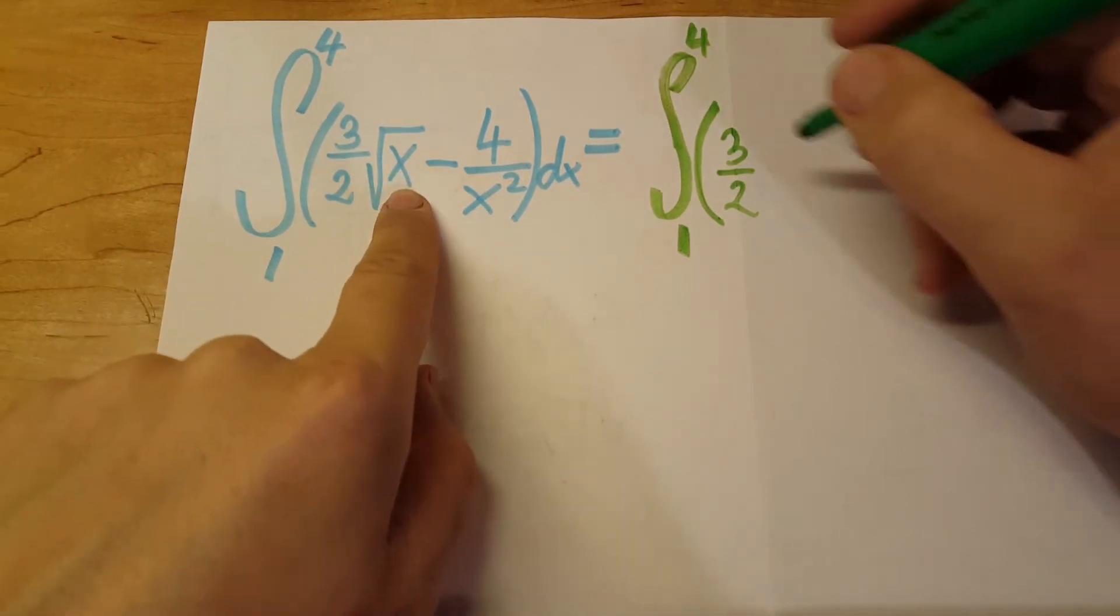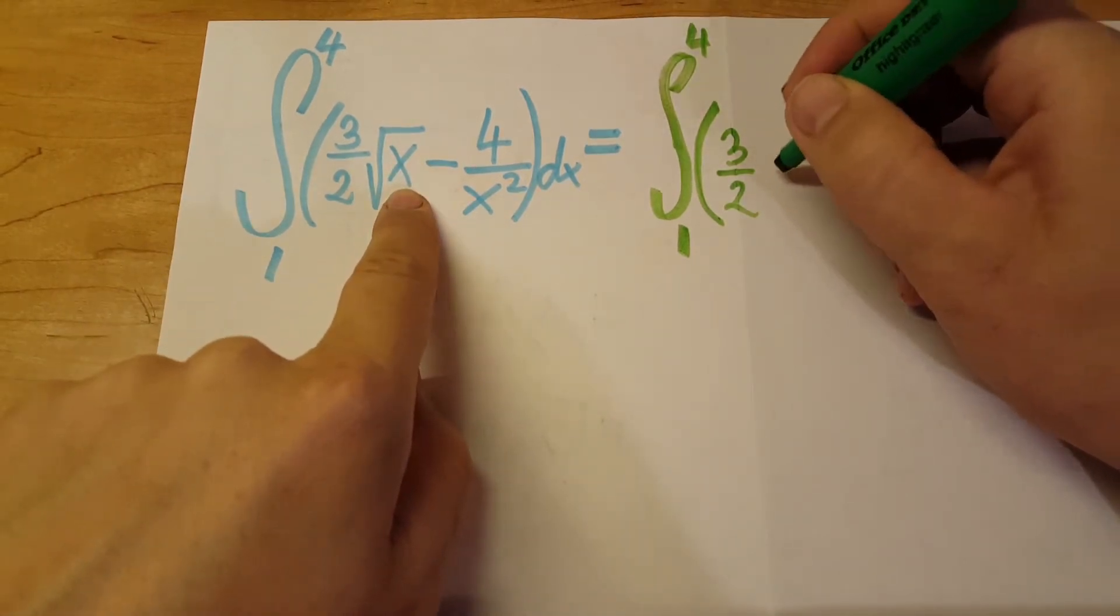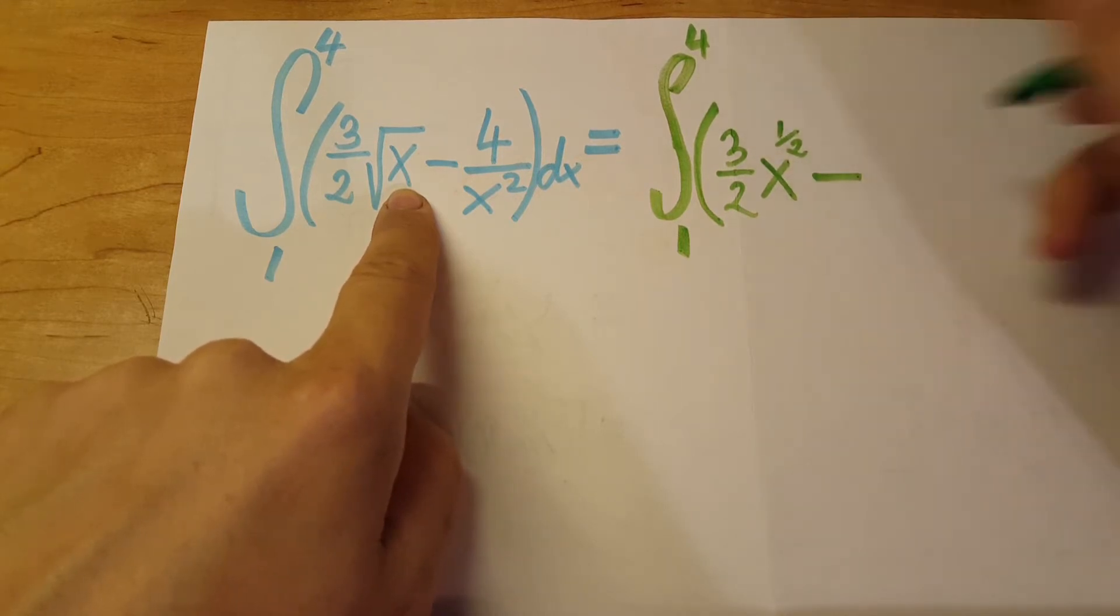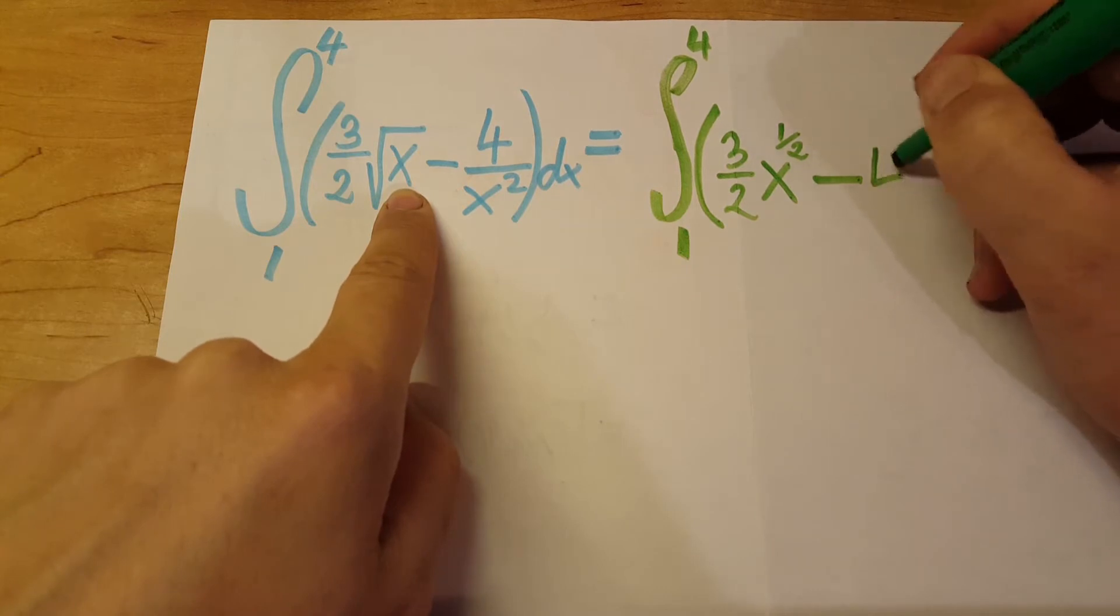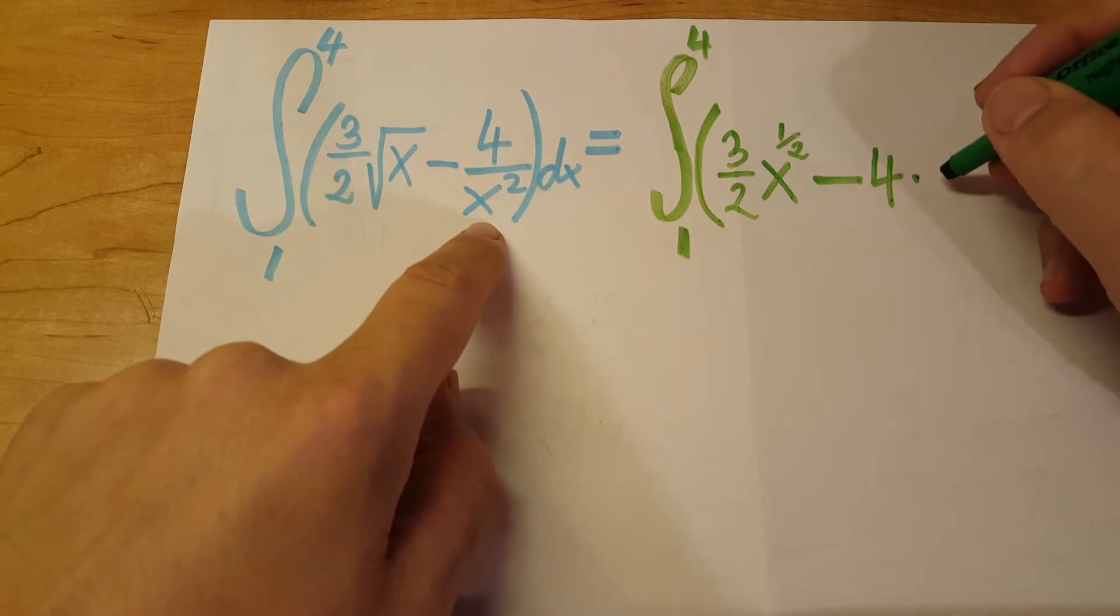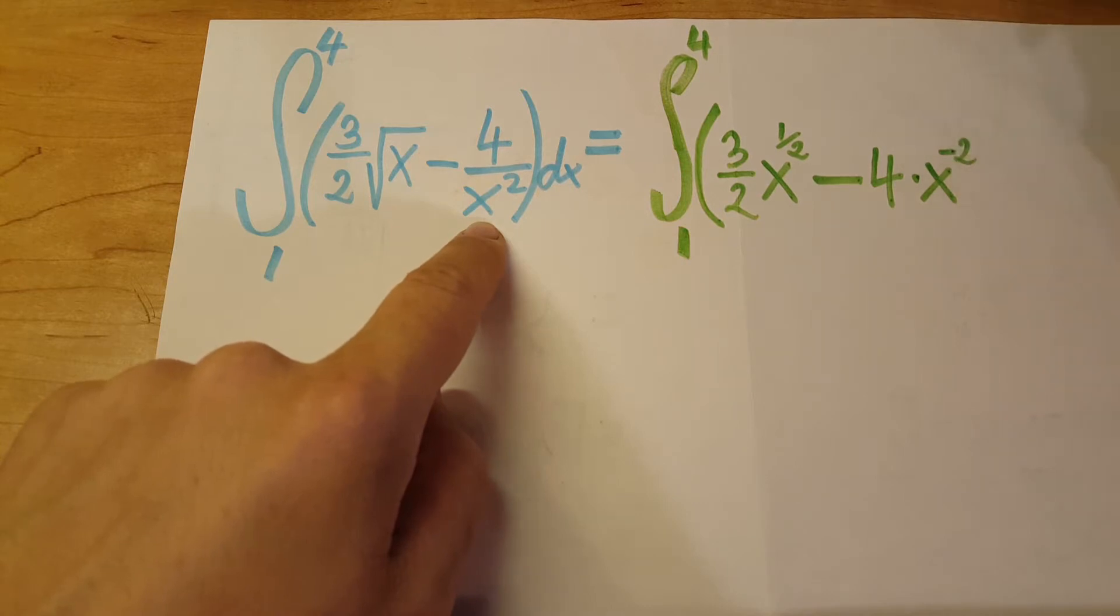We're going to write this one in exponential form. So x to the power of 1 half minus 4 times. We're going to bring the x and turn it into an exponent. So it will be negative 2 up here dx. There you go.